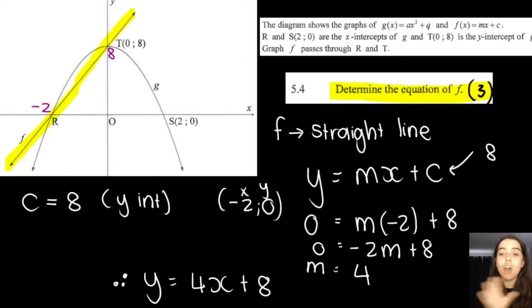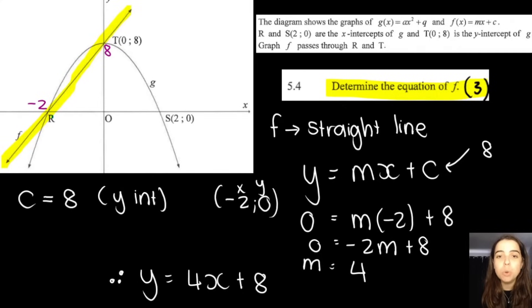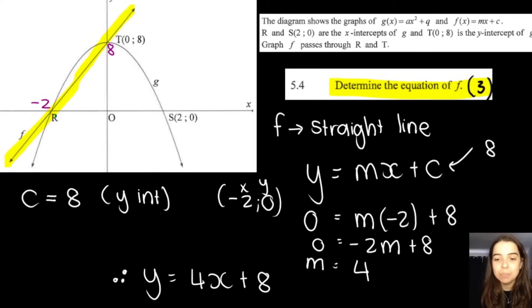Now remember, the question didn't ask me to solve for m or to find m. They wanted the equation. So they wanted the equation of f. So it's in the form of y equals mx plus c. You fill in your m, you fill in your c. And then there we go. You've got your answer. There's your m, your value of 4. There's your c, your value of 8.